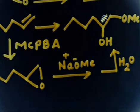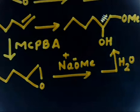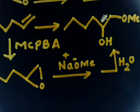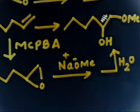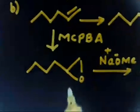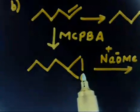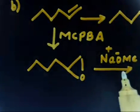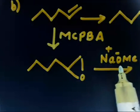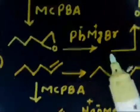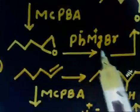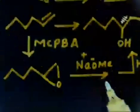So to summarize: an alkene can be converted into an alcohol via an epoxide intermediate. You form an oxirane ring, and this ring is then opened by a nucleophile. In the cases so far I am using the Grignard reagent or NaOMe as the nucleophile.